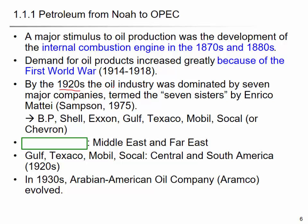By the 1920s, the oil industry was dominated by seven major companies known as the Seven Sisters: BP (British Petroleum), Shell, ExxonMobil (which were separate — Exxon and Mobil — and later merged), Gulf, Texaco, and Socal, now called Chevron. BP and Shell produced oil mostly from the Middle East and Far East, while Gulf, Texaco, Mobil, and Socal were located in North America with major production in South and Central America. Saudi Aramco is now one of the biggest oil companies in the world.